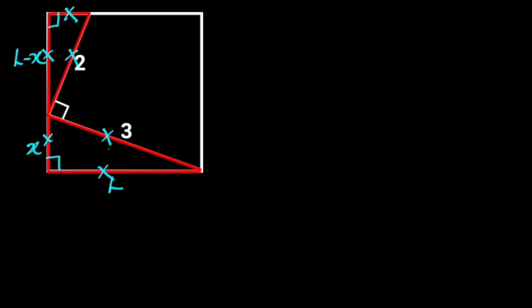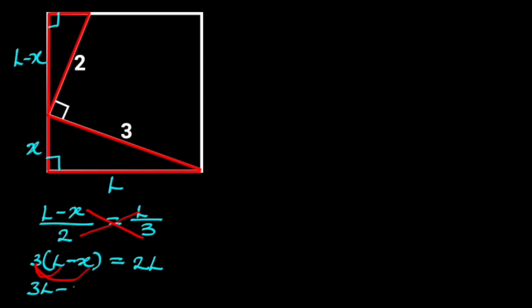If that is the case, we can say that L minus X over 2 is equal to L over 3. By cross-multiplication, we have 3 times L minus X is equal to 2L. On the left side, 3 times L is 3L, 3 times minus X is minus 3X. So we have 3L minus 3X is equal to 2L.